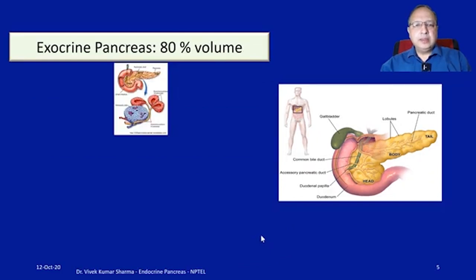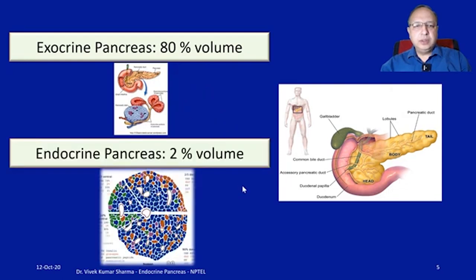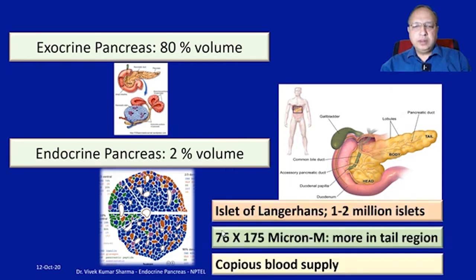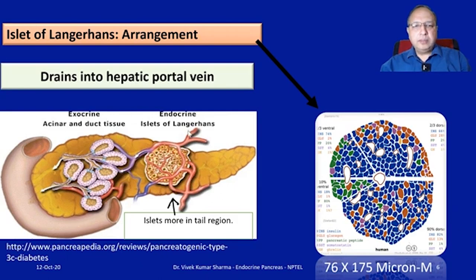Exocrine pancreas is roughly 80% by volume. Endocrine pancreas is roughly 2% by volume and consists of the islets of Langerhans. We have roughly 1 to 2 million islets, with a size of roughly 76 to 175 microns. They are more located in the tail region and have a copious blood supply. The blood from the islets drains into the hepatic portal vein and from there goes to the rest of the GIT.